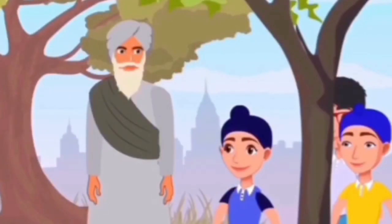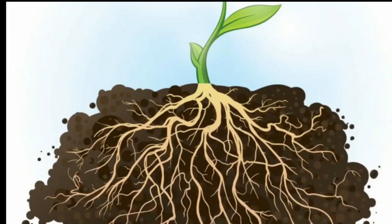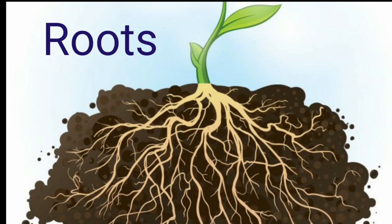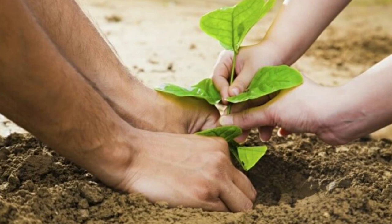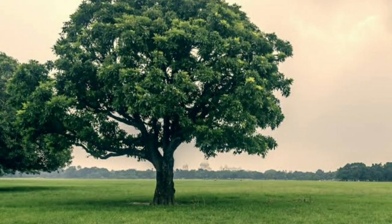A plant's roots are under the soil and they hold the soil strongly. Children, we see that to hold the tree strongly, the roots play an important role. These roots give support to the tree. They not only support the tree but also hold the plant in soil firmly.